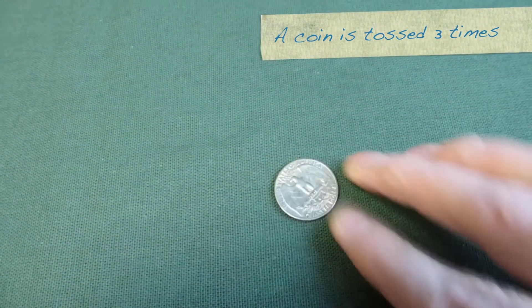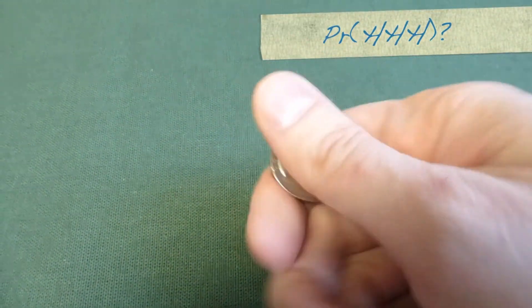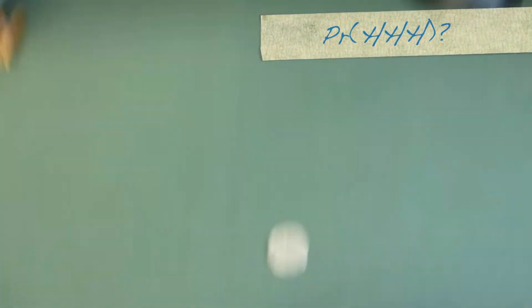A coin is tossed three times. What's the probability that we get three heads? Hopefully at this point you can all tell me that this probability is going to be one out of eight.